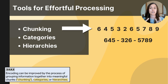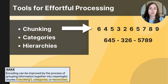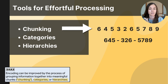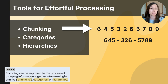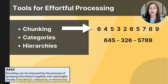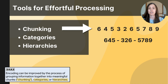Chunking leverages our brain's ability to hold information in groups by organizing individual bits into smaller groups. Chunking is helpful for both short-term working memory — which is really limited, holding only about seven bits of information at a time — and for long-term memory. For example, you've likely used chunking to remember telephone numbers, your social security number, or your bank card number: all numbers chunked into more meaningful groups to help you recall them.